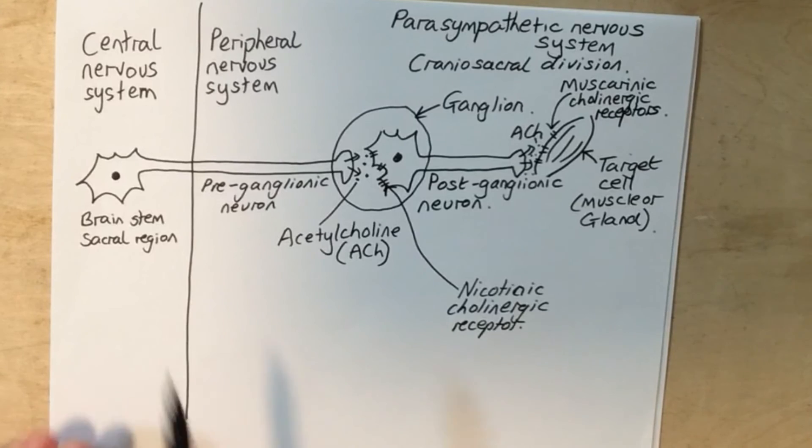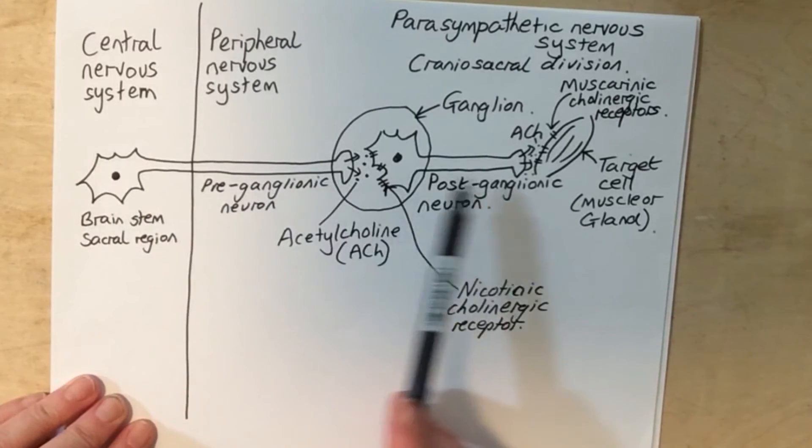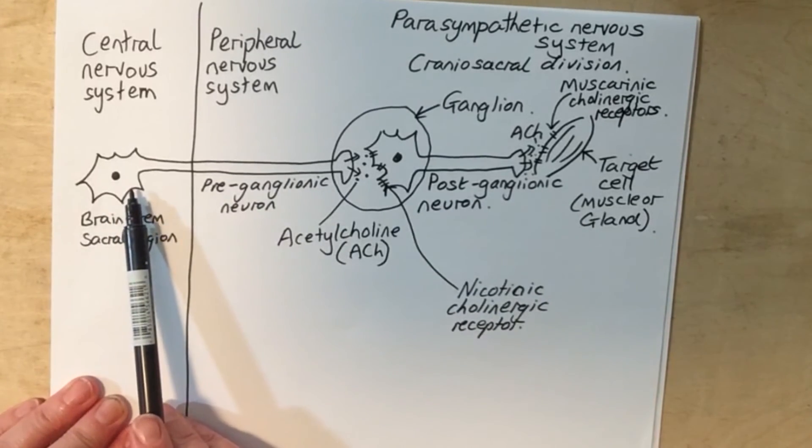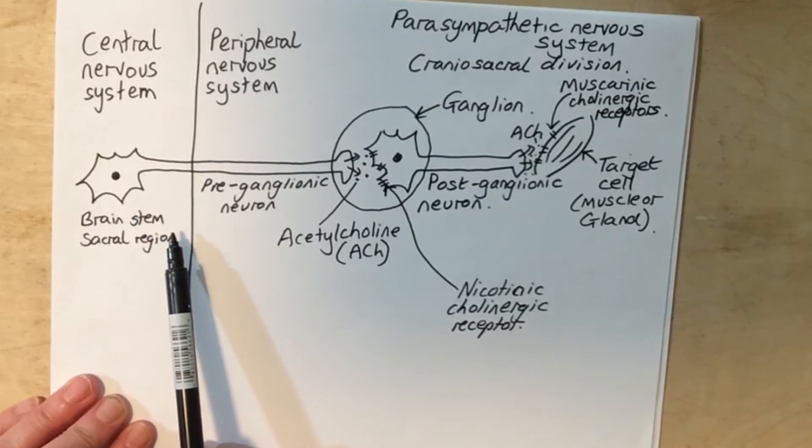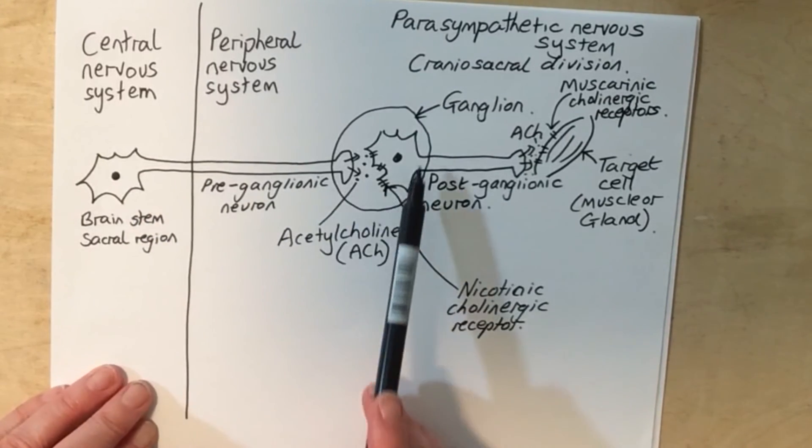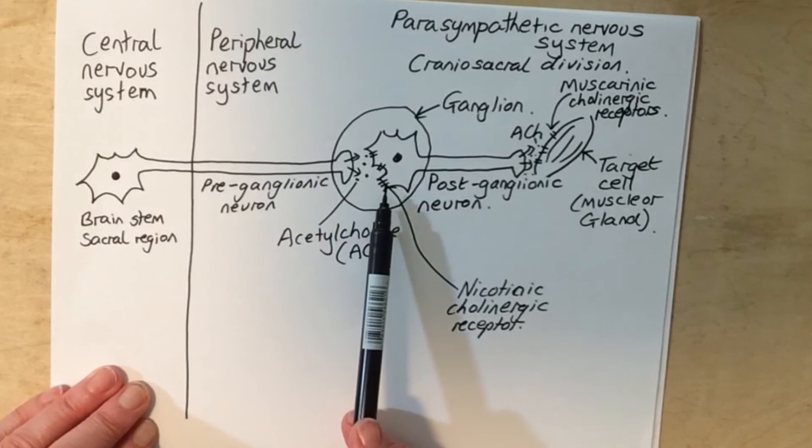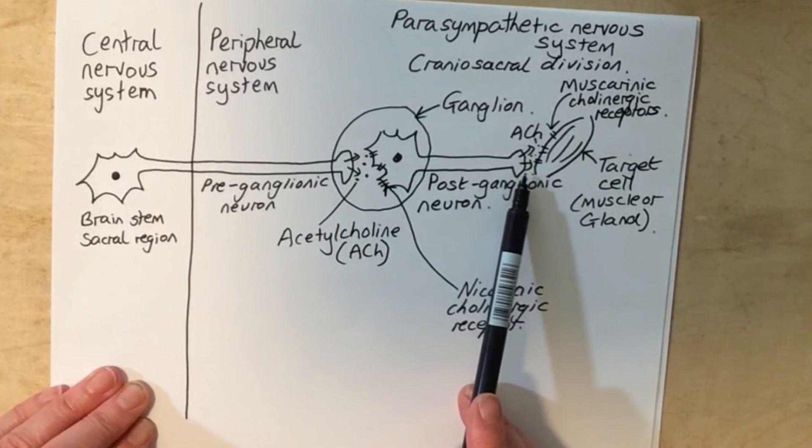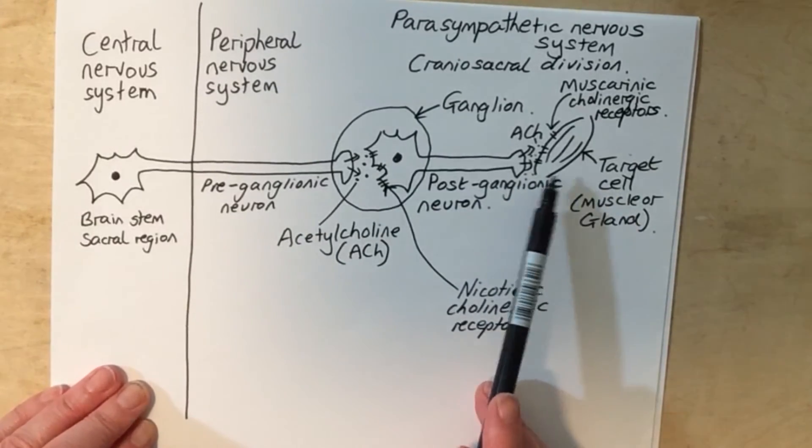All right, so to summarize, we have two neurons end to end. The preganglionic neuron emerges from the brain stem or the sacral region and will synapse with the postganglionic neuron at the ganglia, and then the postganglionic neuron will synapse with the target cell and therefore control activity of that target cell.